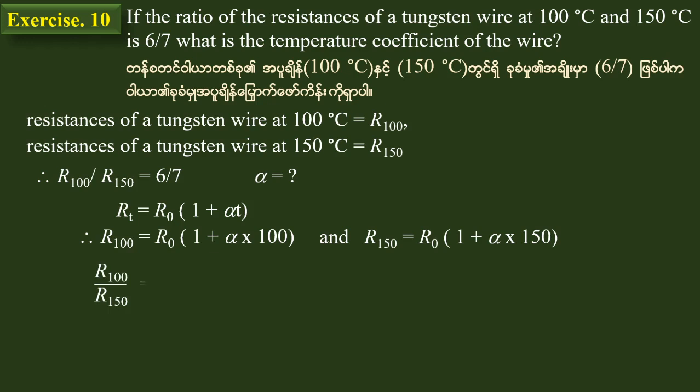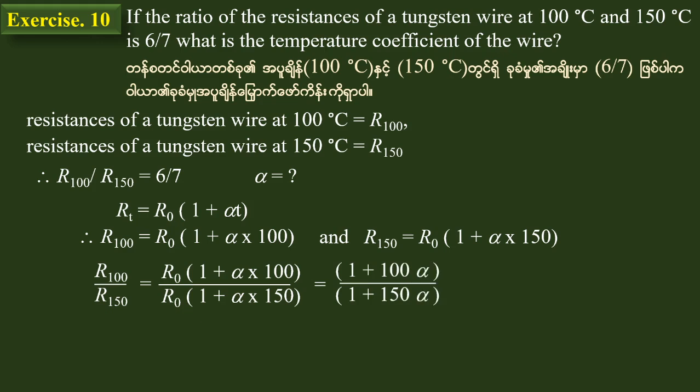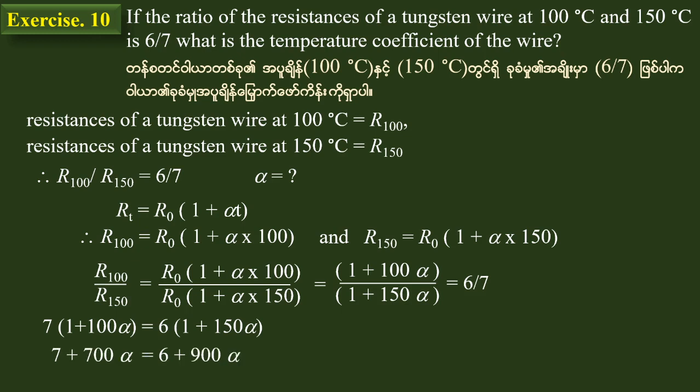Therefore, R100 divided by R150 is equal to R0 into 1 plus alpha into 100 divided by R0 into 1 plus alpha into 150. R0 cancels, giving 6 by 7 equals 1 plus 100 alpha over 1 plus 150 alpha.